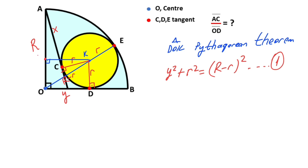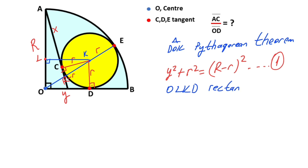Rectangle OLKD is formed. Since the radius of the small circle is lowercase r, this side must also equal lowercase r. We know the radius of the quarter circle is uppercase R, so the remaining length here is uppercase R minus lowercase r.